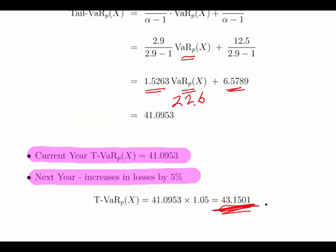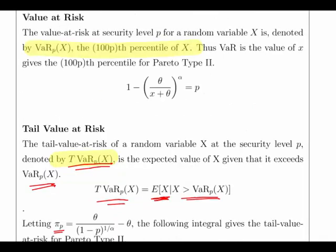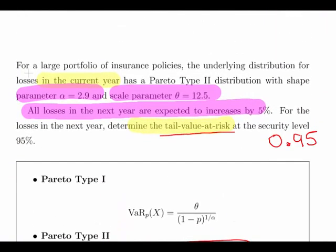Again, rounding error comes into that, but that's our answer: 43.1501. Just to highlight the fact, I'll go back to the question at the start. For the losses in the next year, determine the tail value at risk at a security level of 95 percent.